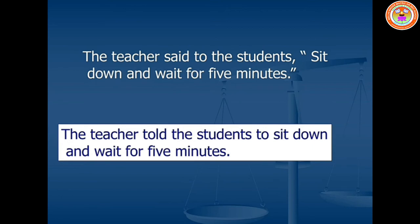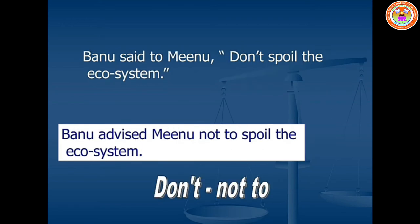Number five: The teacher said to the students, 'Sit down and wait for five minutes.' This is an imperative sentence, so the conjunction word is 'to.' Answer: The teacher told the students to sit down and wait for five minutes. We removed the quotation marks and added 'to.' Number six: Banu said to Minu, 'Don't spoil the ecosystem.' This is also an imperative sentence. If the imperative sentence starts with 'don't,' we have to change 'don't' into 'not to.' Answer: Banu advised Minu not to spoil the ecosystem.